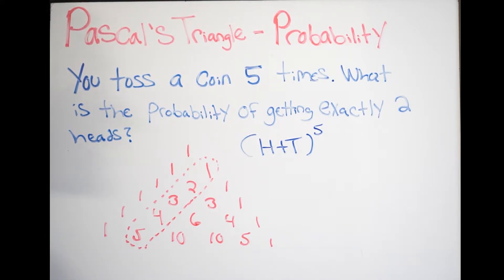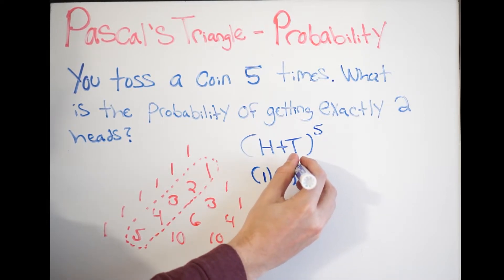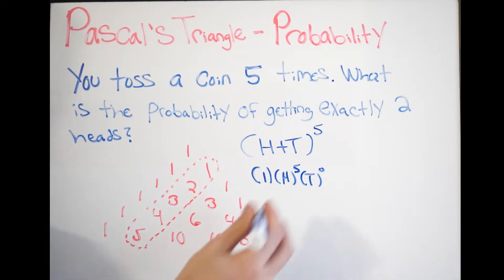Now, all you're going to do is expand this out. So, let's go ahead and do that. So, writing this out, we get 1, then we get H to the fifth, and T to the zero, and then just continuing on.